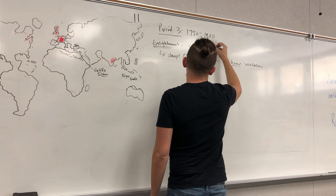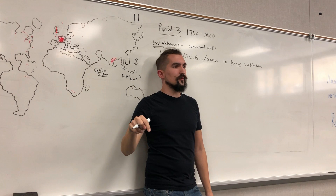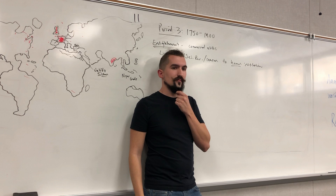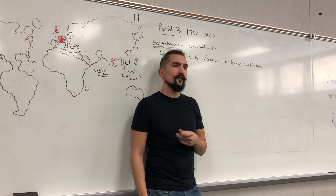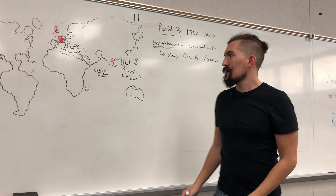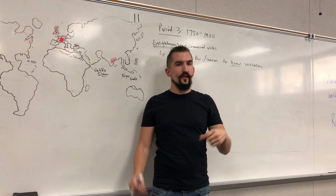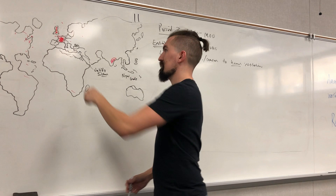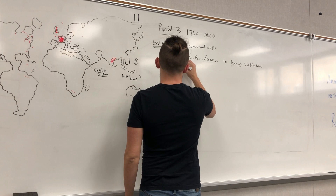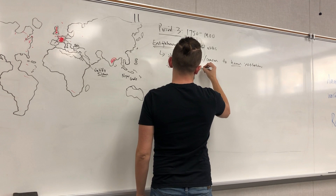What problem did these commercial elites have with the current political systems? They had no representation. They couldn't because they were born into the hierarchy. In Europe and the Americas, there were very rigid hierarchies — in the Americas based on race with the Spanish caste system, and in Europe based on class from feudalism. Both feudalism and absolute monarchs are going to be questioned by the Enlightenment.